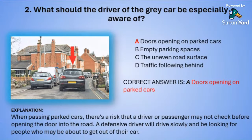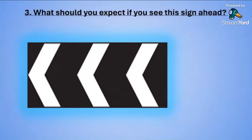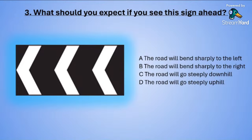Question three: What should you expect if you see this sign ahead? A: the road will bend sharply to the left. B: the road will bend sharply to the right. C: the road will go steeply downhill. Or D: the road will go steeply uphill.